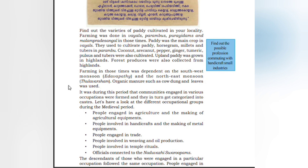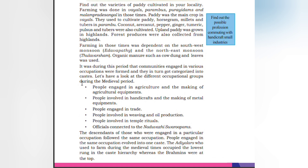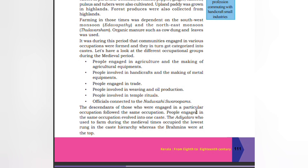Farming in those times was dependent on the southwest monsoon (Nerevapadhi) and the northeast monsoon (Thulavarsham). Organic manure such as cow dung and leaves was used. It was during this period that communities engaged in various occupations were formed and in turn got categorized into castes. The different occupational groups during the medieval period included: people engaged in agriculture and making agricultural equipment; people involved in handicraft and making metal equipment; people engaged in trade; people involved in weaving and oil production; people involved in temple rituals; officials connected to Naduvali Surubhams. The descendants of those engaged in a particular occupation followed the same occupation, and people engaged in the same occupation evolved into one caste.